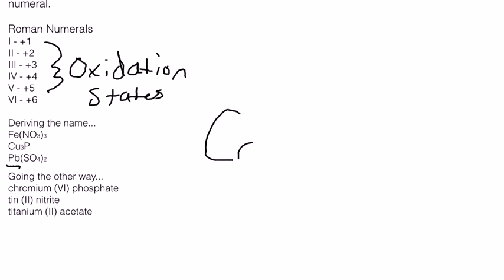And then phosphate, and this is why we memorize these things, is PO4 3-. The ionization energy on phosphate or the oxidation state on phosphate is 3-.